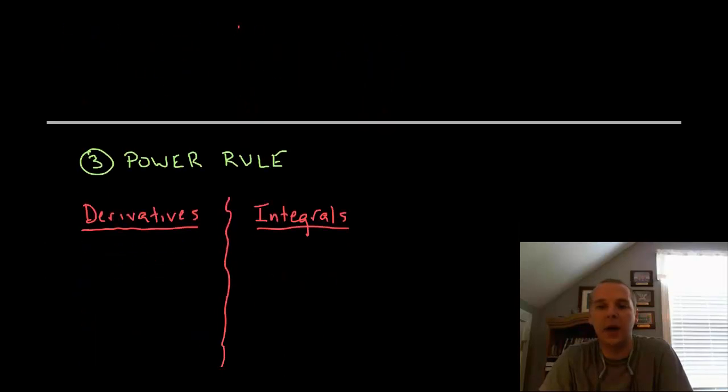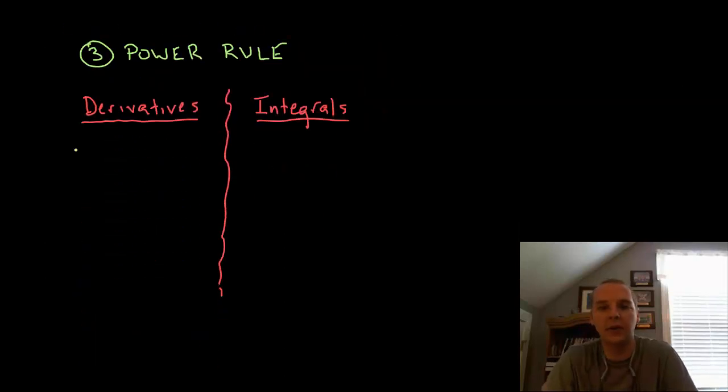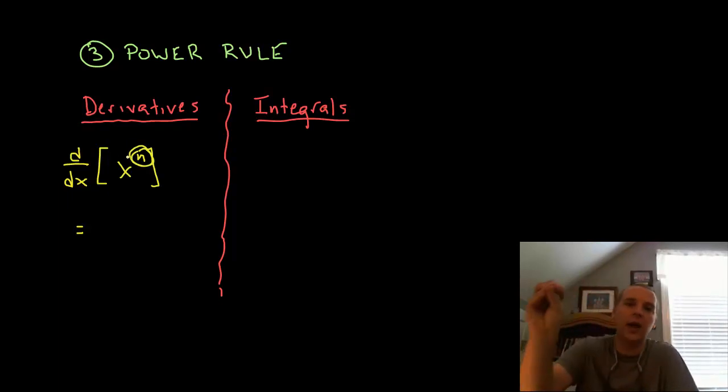Next up is the power rule. We use this one all the time for derivatives. This is when you have some power of a variable expression like x squared, x cubed, x to the 5th, x to the 7th, etc. The pattern if you'll recall was you take this exponent here and you move it out of the exponent and it becomes the coefficient. And then whatever the exponent is you decrease it by one. So n x to the n minus one, that would be the derivative. The exponent goes down by one.